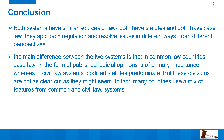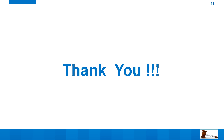In conclusion, both systems — common law and civil law — have similar sources of law. Both have statutes and both have case law. What is different is the approach: in civil law countries, more importance is given to statutes, while in common law countries, more importance is given to judge-made law. The main difference is that in common law countries, case law in the form of published opinions is of primary importance, while in civil law systems, codified statutes predominate. However, these divisions are not as clear-cut as they might seem — many countries use a mix of features from both systems, and in today's world these systems are not applied in their purest forms.